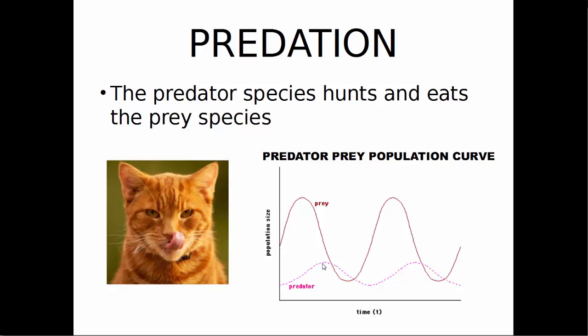As the cat population grows, they eat more mice, so the mouse population goes down. At a certain point it gets so low that the cats have nothing to eat, so they either die out or move to a different community. When their population goes down, the mice are able to grow again, and the cycle continues over time.